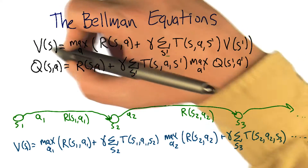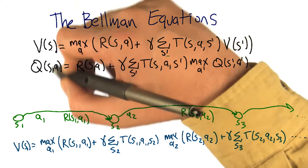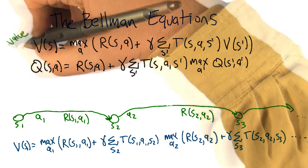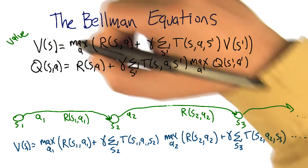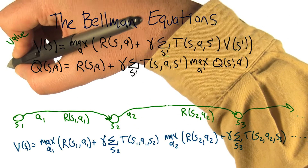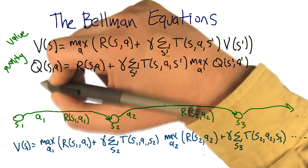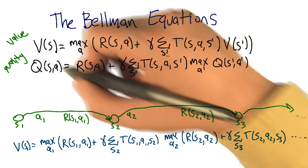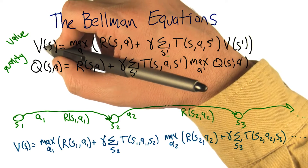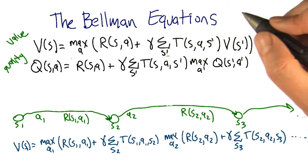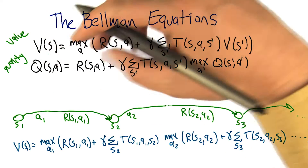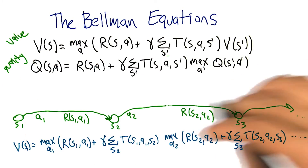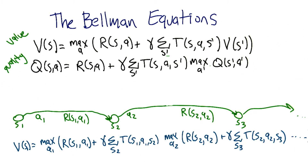Here's a summary of what we were just talking about. We have these two different forms of the Bellman equation: one V, which we can think of as standing for value, and one Q, which we can think of as standing for quality. But mostly they're just letters from the end of the alphabet that we made up names for — like U for utility, V for value, and Q for quality. The point is that these are just expressions that represent different pieces of this overall sequence of states, rewards, and actions.